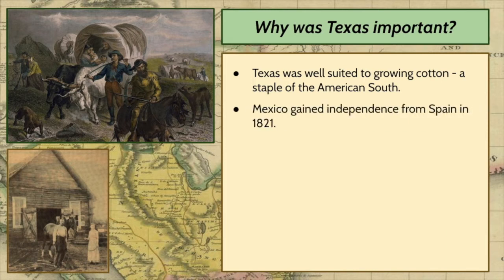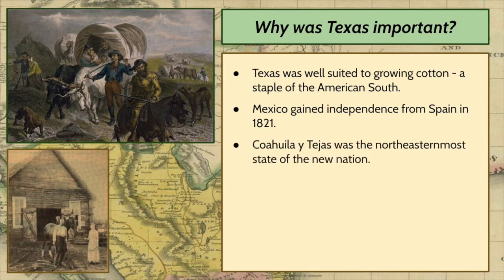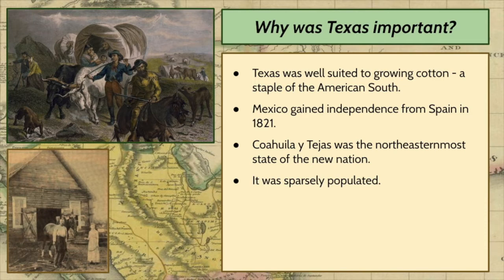Mexico gained its independence from Spain in 1821. Up until 1821, Mexico was Nueva España. Mexicans revolted against Spanish rule and were given their independence in 1821. Coahuila y Texas was the northeasternmost state of the new nation of Mexico. Under Spanish rule, some American settlers were allowed to come into Texas, and under Mexican rule that was continued. There were very few people in this region, and because of that, Mexico actually wanted settlers to come in and populate the area.